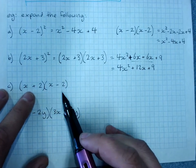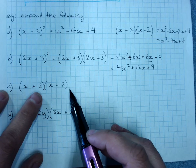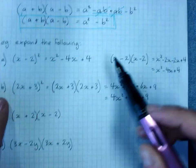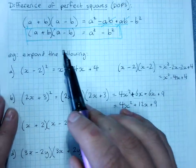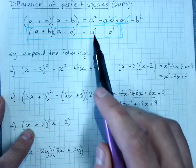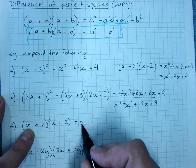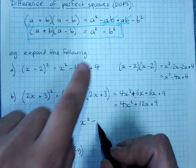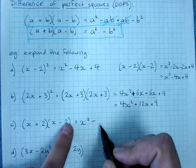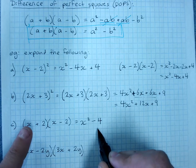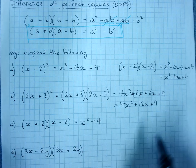(x+2)(x-2), this is a difference of perfect squares, same terms, different signs. We'll use the rule for this one. A difference of perfect squares will be the square of the first term, x², minus the square of the second term, 2² is 4. If you weren't sure how I got it, just expand it out.